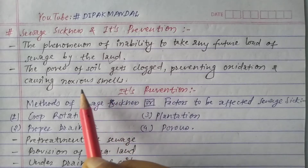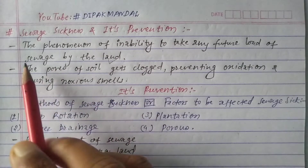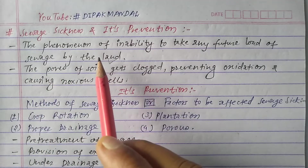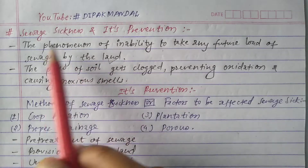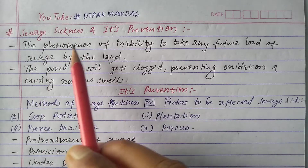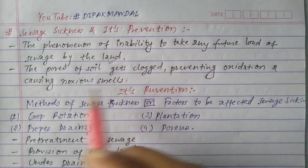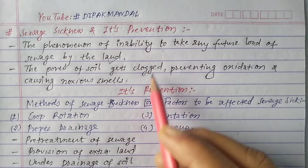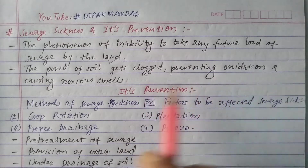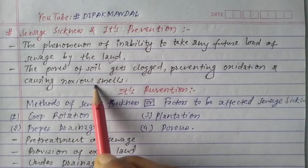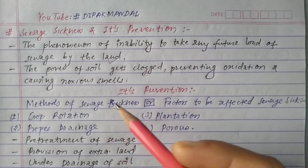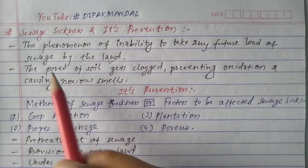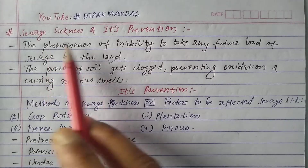These two are the main things to know about sewage sickness: the pores of the soil get clogged preventing oxidation, and it causes a noxious smell. Now let's look at how we can prevent sewage sickness.